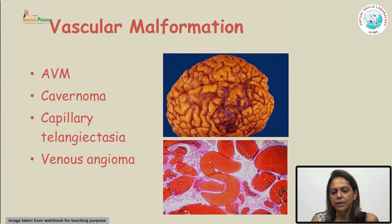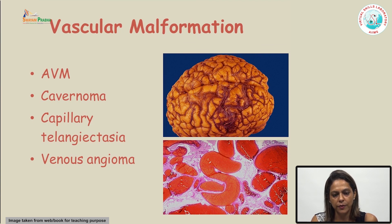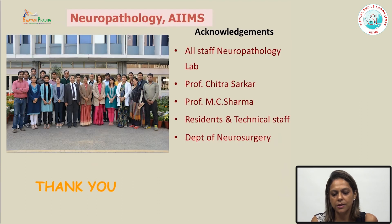Other, rarer causes of bleed in cerebrovascular disease include arteriovenous malformation, cavernomas, capillary telangiectasias, and venous angiomas. Thank you.